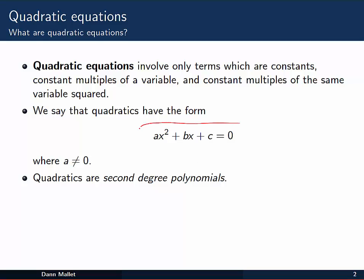Generally, we'll say that quadratics take this kind of form here, ax squared plus bx plus c equal to zero, where a, b, and c are constants, and x is the variable.